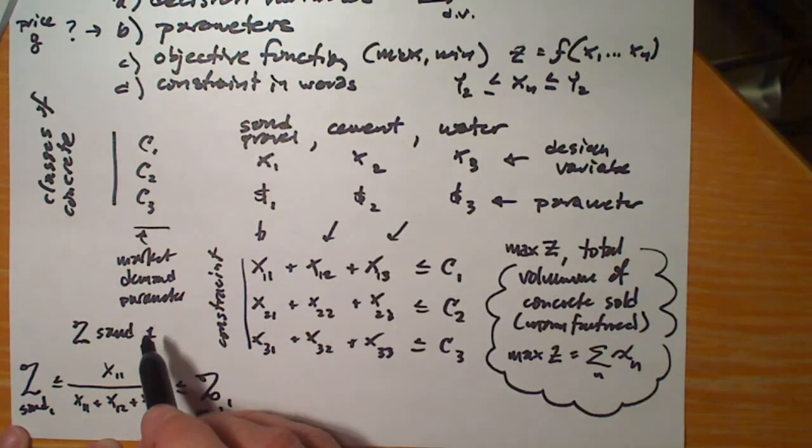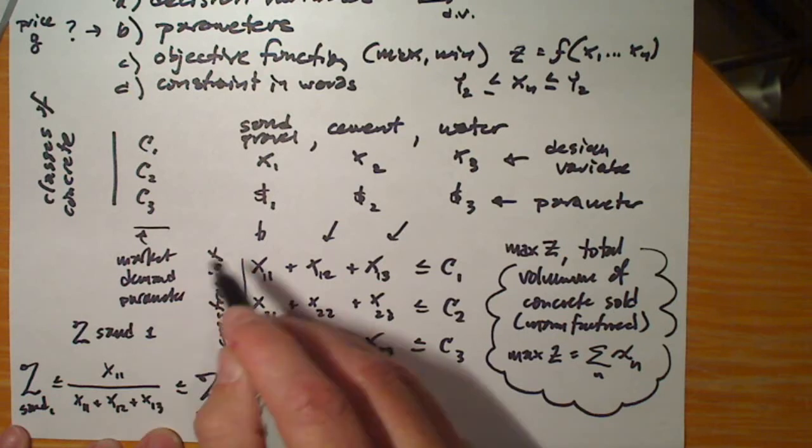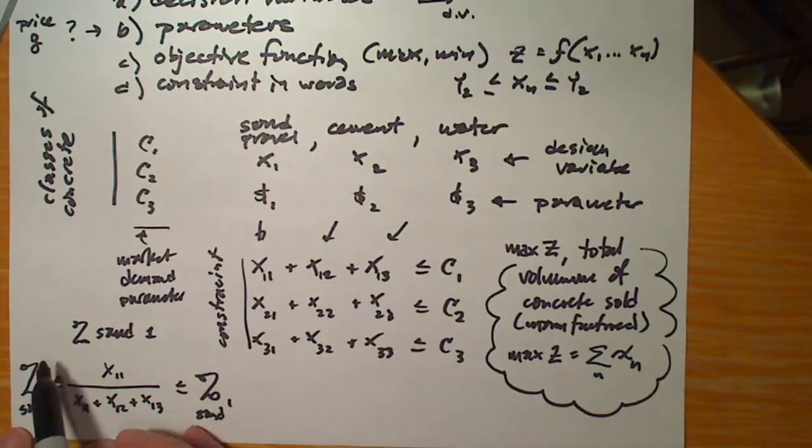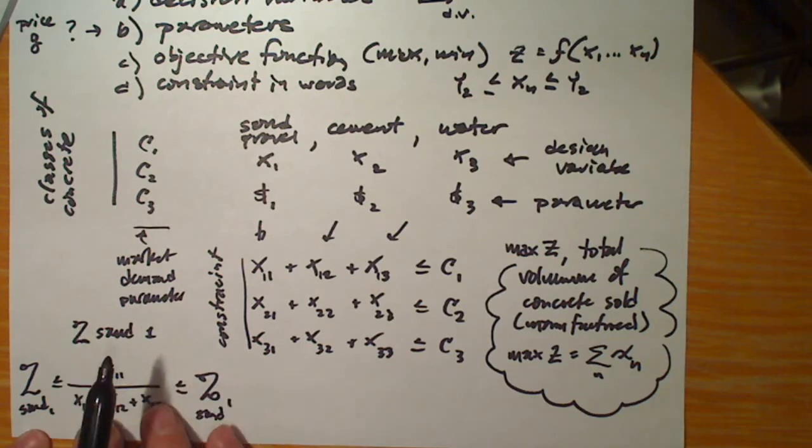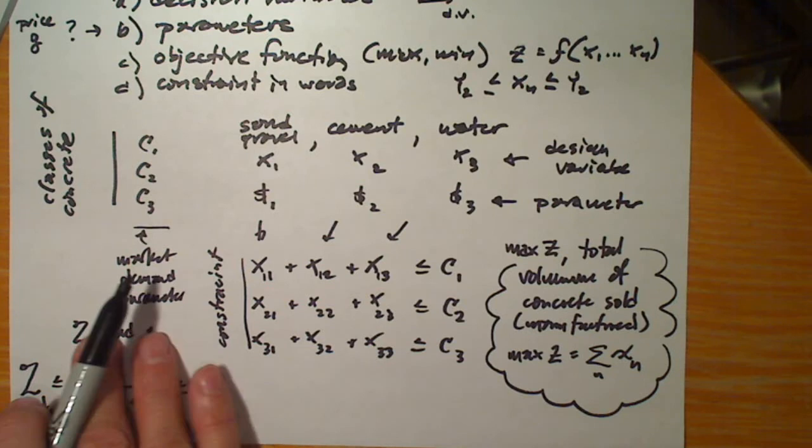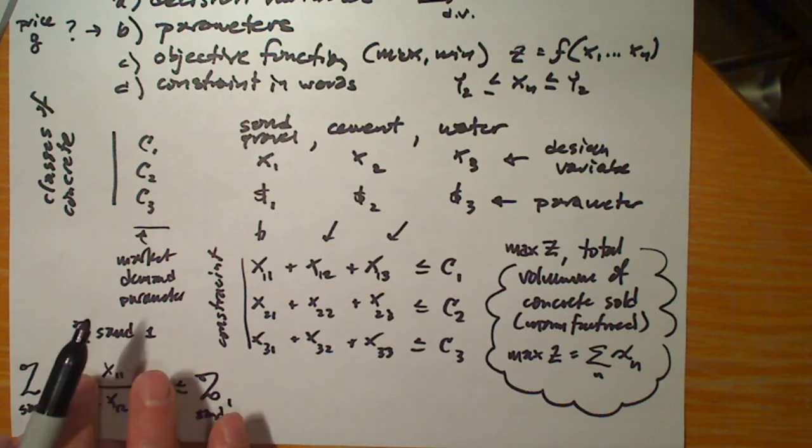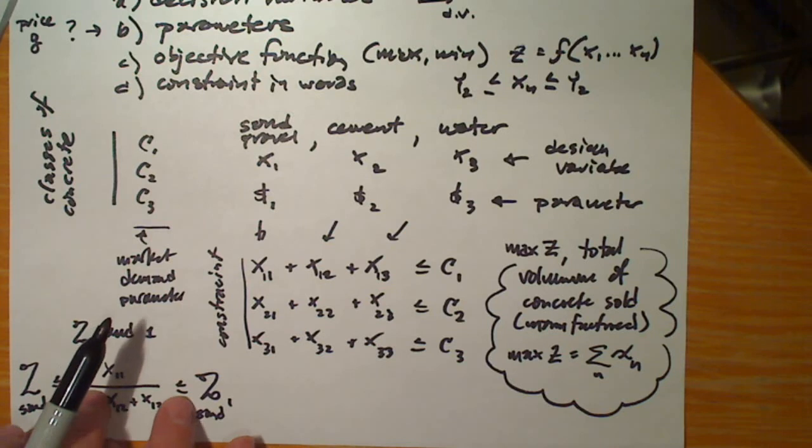And for example, for cement, we would change the index for the material that we use, and we would write constraint equations that represent these mixed design constraints. This says nothing really about what the optimal mixed design is. It just identifies the feasible region of these mixed designs.